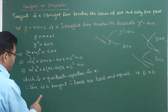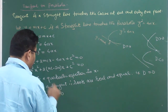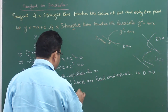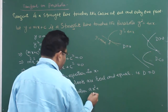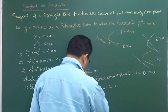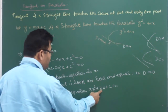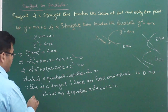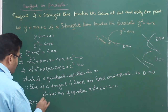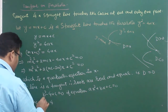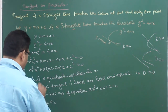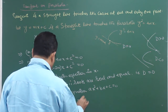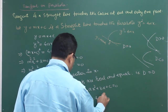So applying D = 0, that is B² - 4AC = 0. For our equation m²x² + (2mc - 2a)x + c² = 0, the coefficient B is (2mc - 2a). So we get (2mc - 2a)² = 4 · m² · c². Dividing both sides by 4, we have (mc - a)² = m²c², which expands and simplifies the algebra.